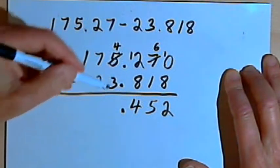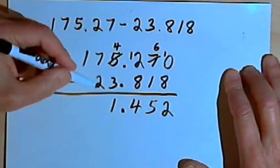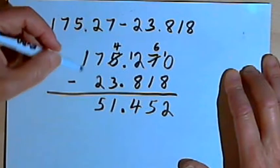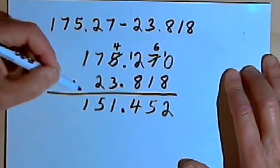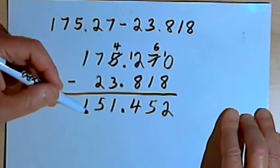I'll put the decimal point in and keep subtracting. 3 from 4 is 1, 2 from 7 is 5, and I'm not taking anything from the 1, so that's 1. So my answer is 151.452.